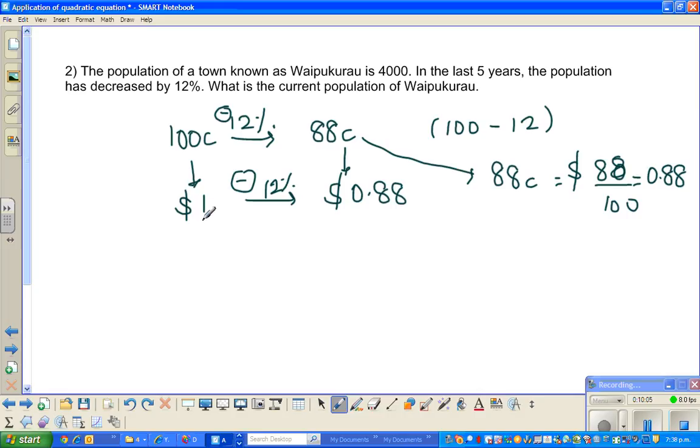One person - it doesn't make sense in person, but mathematically it does. If one person was there and the population reduced by 12%, you would have 0.88 persons.